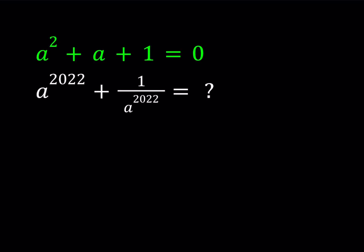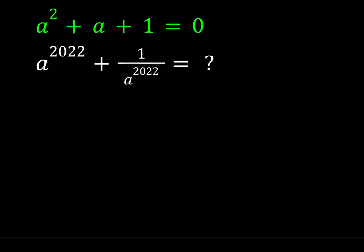Hello everyone. In this video we're going to be evaluating an algebraic expression. Happy New Year — this is the first problem for 2022. We're given that a squared plus a plus 1 is equal to 0, and we're supposed to evaluate a to the power of 2022 plus 1 over a to the power of 2022. I'll be presenting two methods, so let's start with the first method.